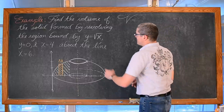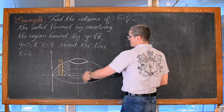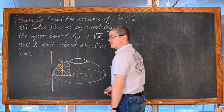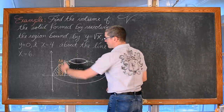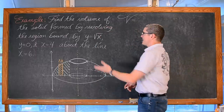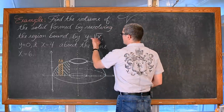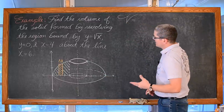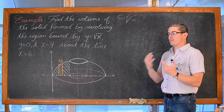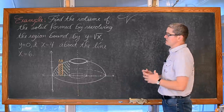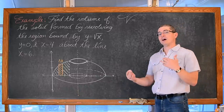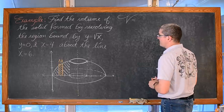Now let's see what it looks like doing it with the shell method. With the shell method and a vertical axis of rotation, we are going to have a vertical representative rectangle, which means I can go ahead and leave this equation as y in terms of x. Now of course I am going to have to deal with radicals, so maybe that is a little bit of a disadvantage, but we do not have to worry about the outside and inside radii separately.